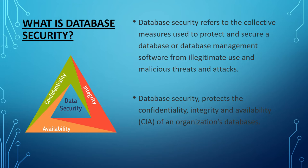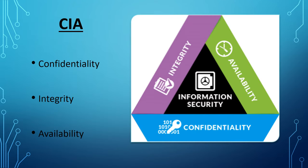This CIA triangle constitutes a very important aspect of database security. The first element is confidentiality. Confidentiality refers to keeping the data secretive so that only authorized users have access to it. It is roughly equivalent to privacy.